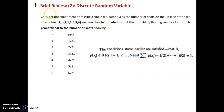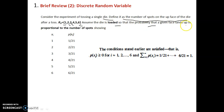Consider the experiment of tossing a single die. Define X as the number of spots on the upface of the die after tossing — the die may land as 1, 2, 3 and so on up to 6. Assume the die is loaded so that the probability that a given face lands up is: P(1) = 1/21, P(2) = 2/21, and so on, P(6) = 6/21.